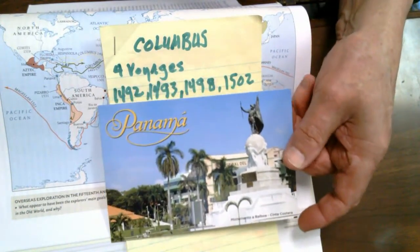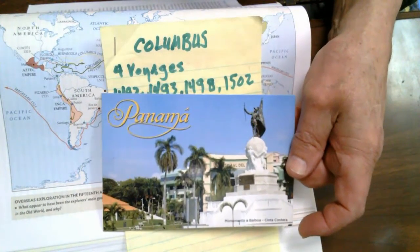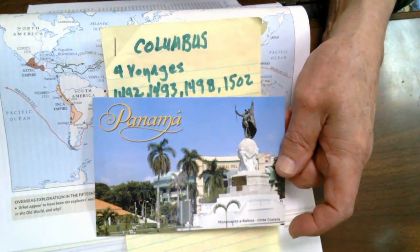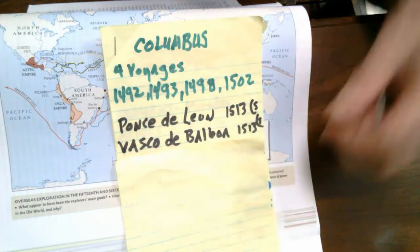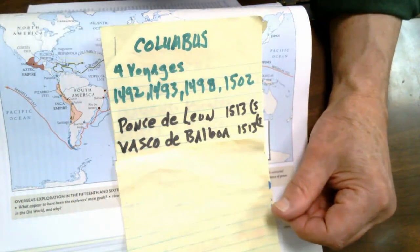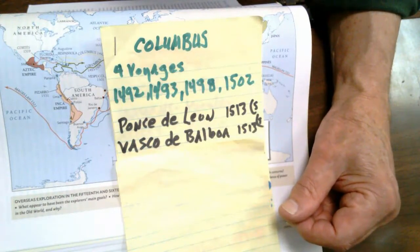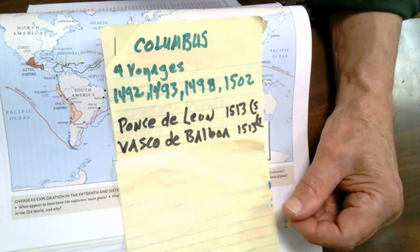If you're going through Panama City — the real Panama City, not the one in Florida — you'll see a huge statue of Balboa. Unfortunately for Balboa, he was accused of treason on trumped-up charges and was executed. In Panama today, U.S. dollars are the currency that passes around. The Balboa is the official currency but is used very rarely.